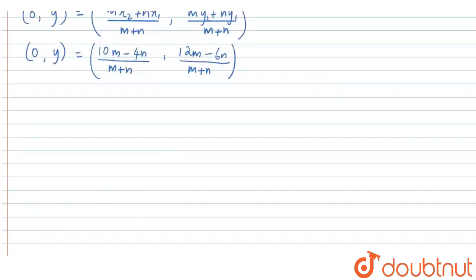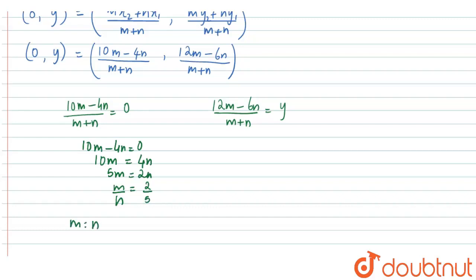So from comparing both sides, we get (10M - 4N) divided by (M + N) is equal to 0 and (12M - 6N) divided by (M + N) is equal to y. So here we get 10M - 4N is equal to 0 or 10M is equal to 4N. That is, 5M is equal to 2N and M by N is equal to 2 by 5. That is, the ratio of division M is to N is equal to 2 is to 5.